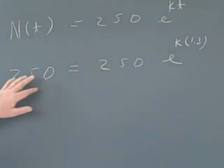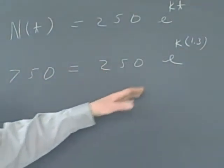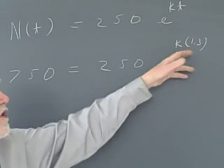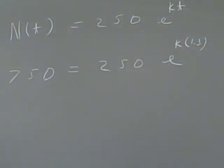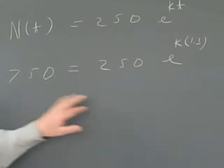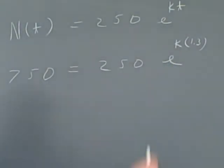But we know that in 1.3 years, we're going to have 3 times as many. So if we start with 250, we end up with 750, and there's e to the kt—we just don't know what k is. This is just an exponential equation. How do we solve exponential equations? The first thing, we isolate the exponential term.